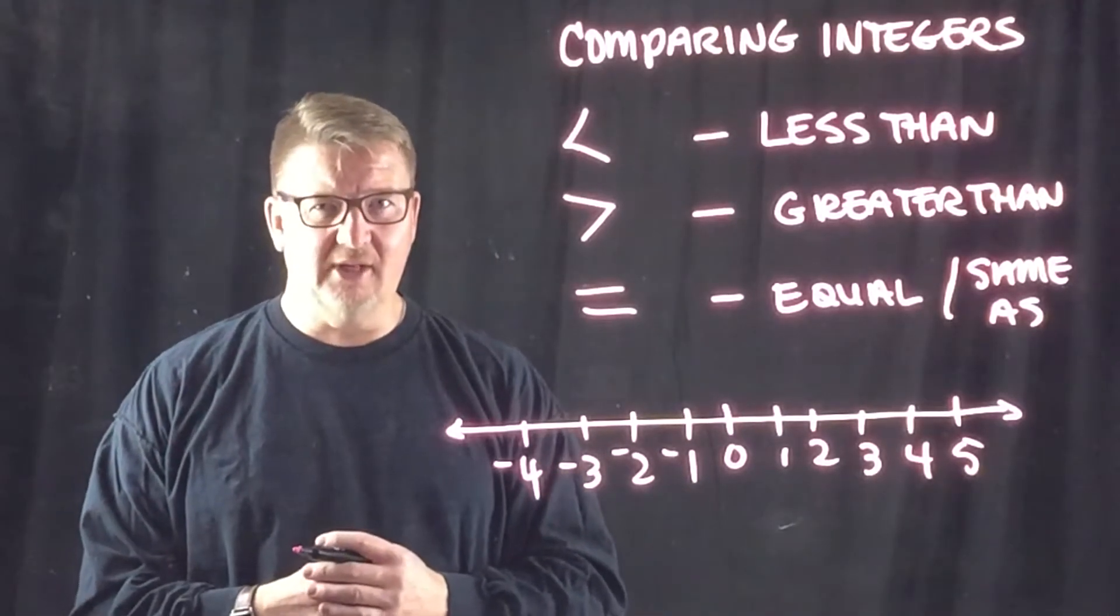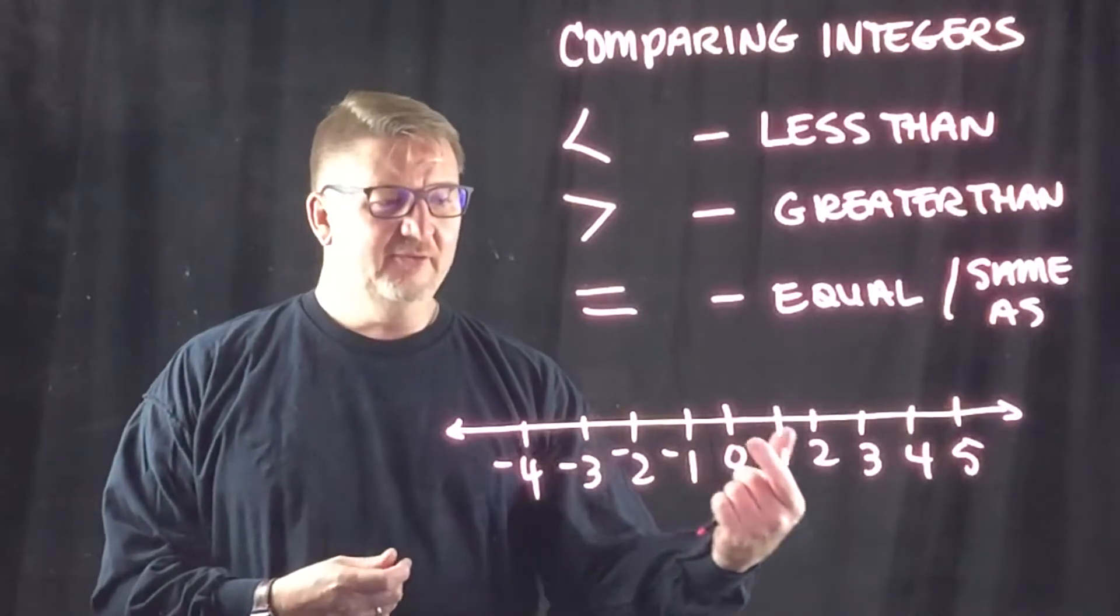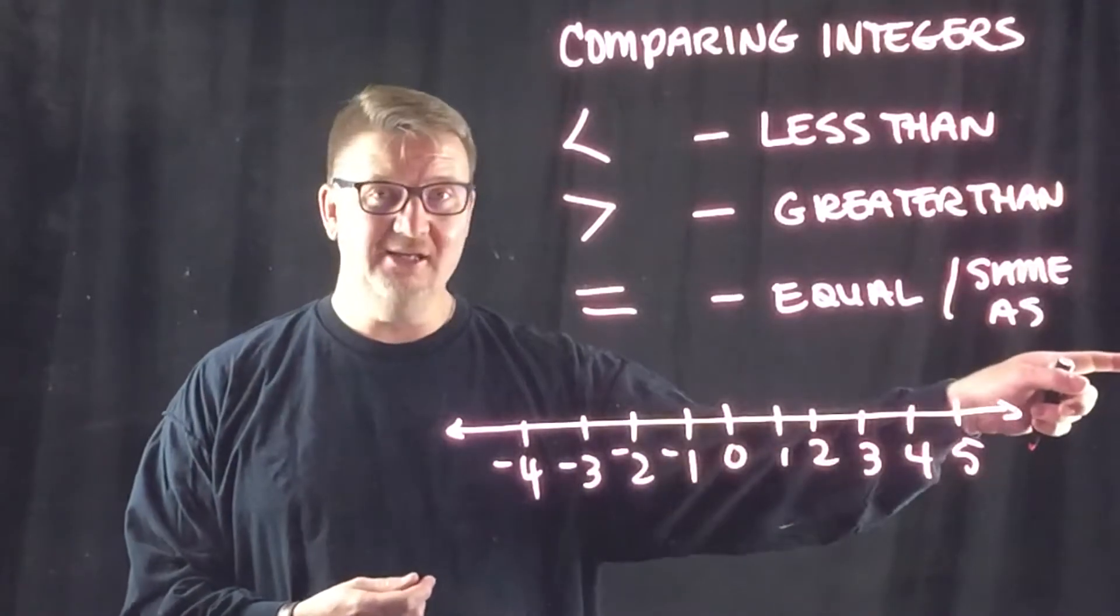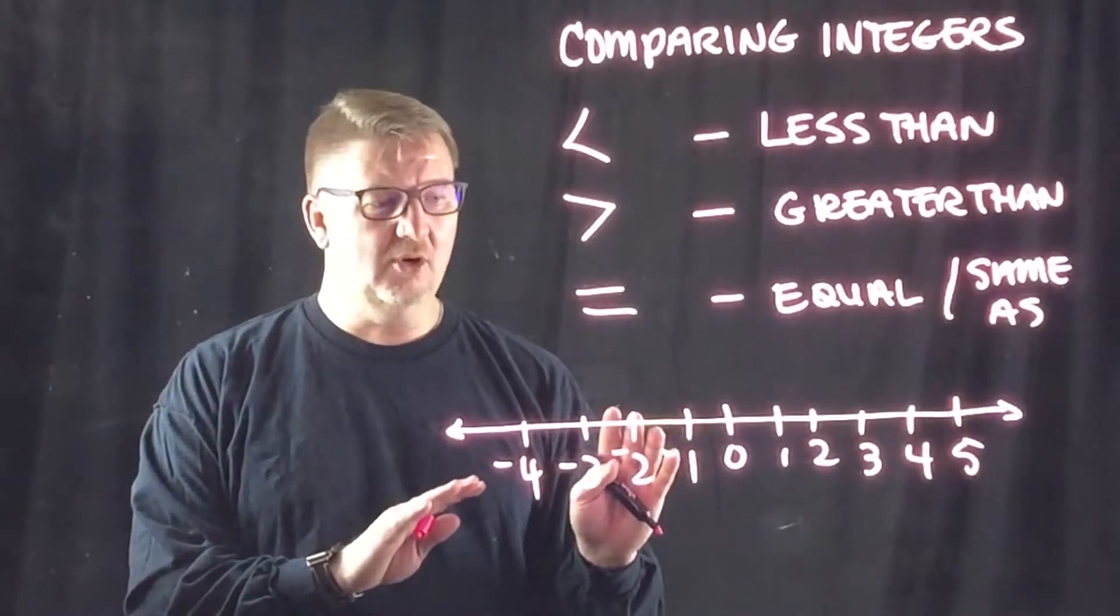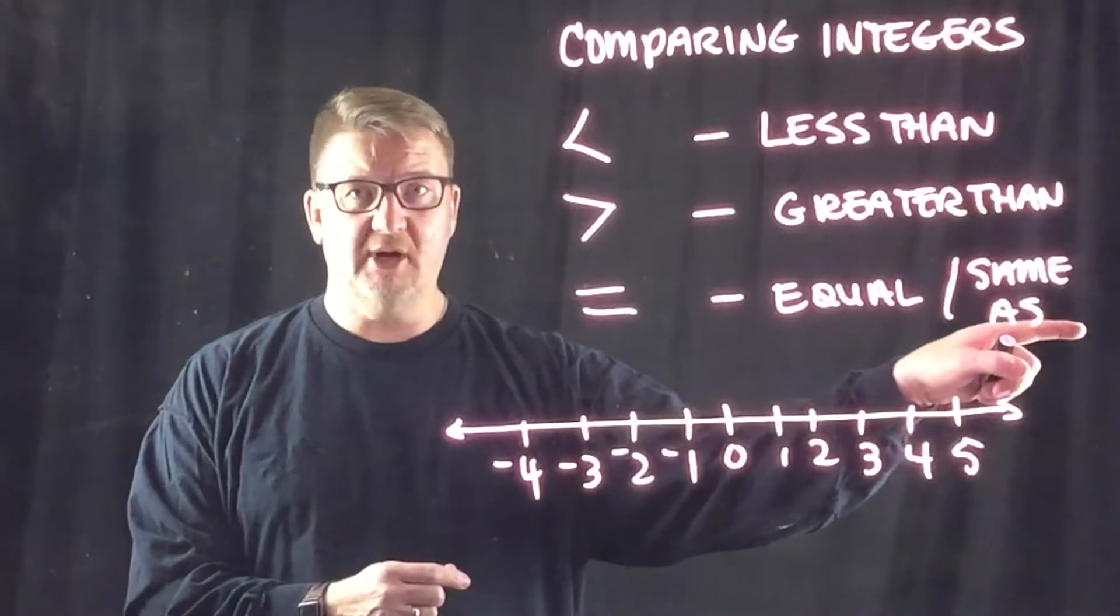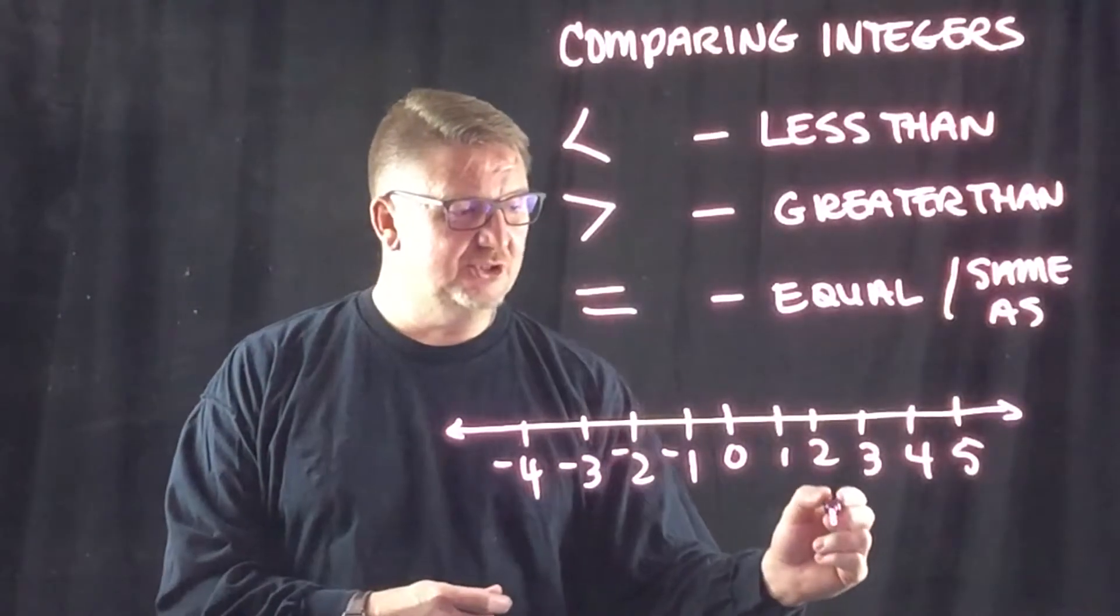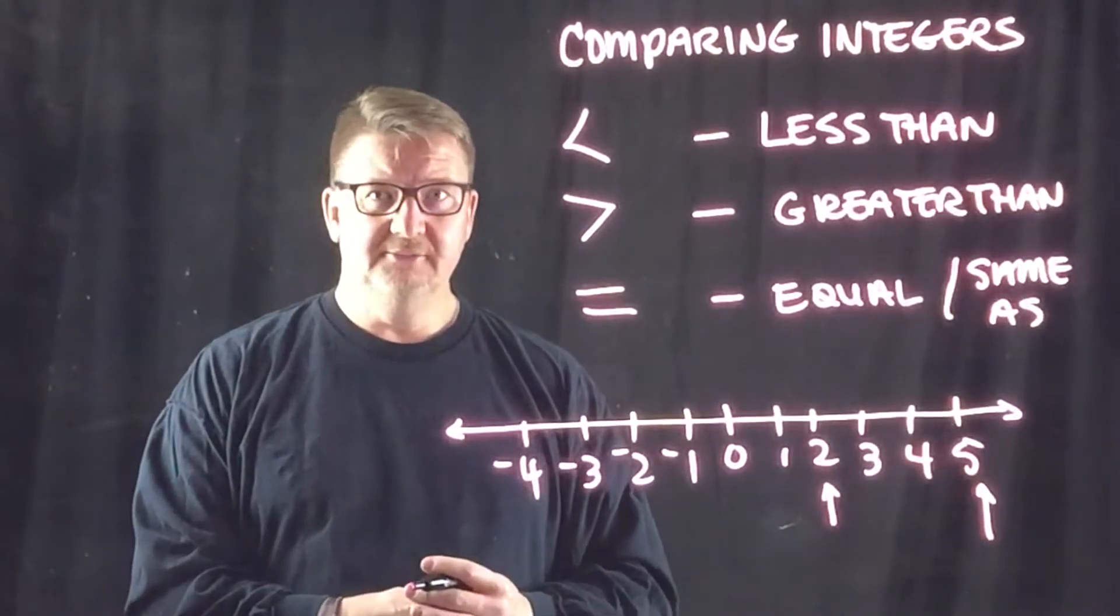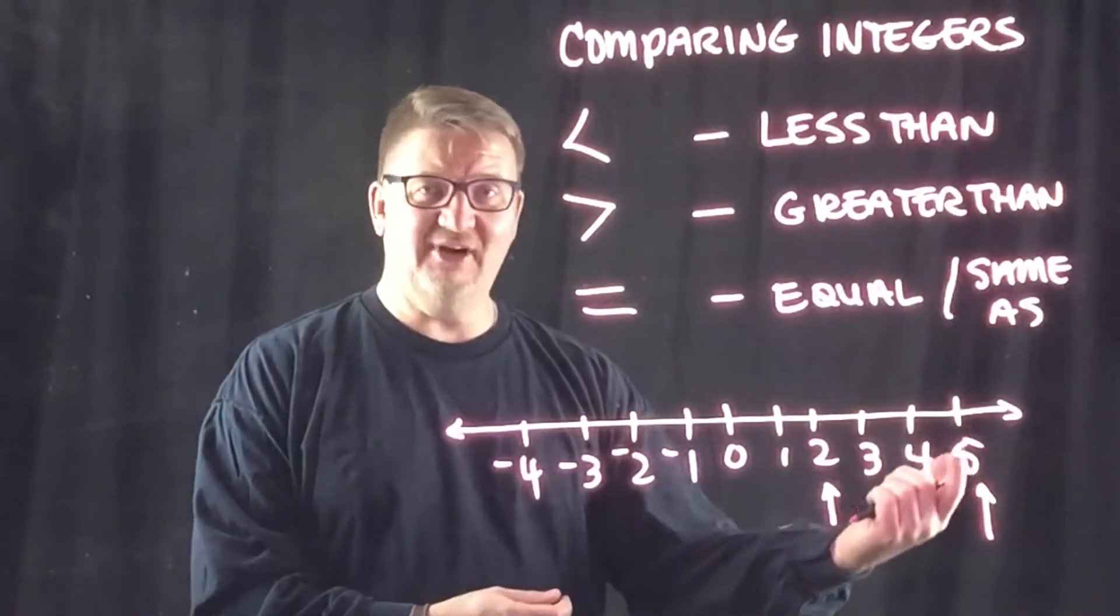Let me explain something about a number line just to make sure you guys understand. The further left you go, the smaller the numbers get. The further right you go, the bigger the numbers get. Now that doesn't matter where on the number line you are. If you're going left, the numbers are getting smaller. If you're going right, the numbers are getting bigger. So for example, if I'm at two and I'm comparing two to five, well I go to the right to get to five, so that means five is bigger than two.